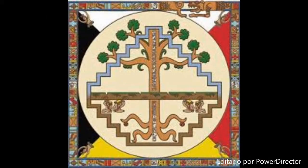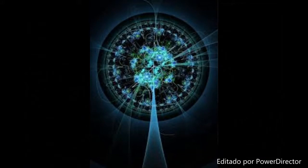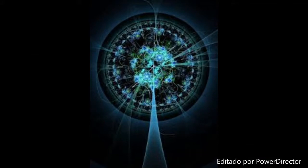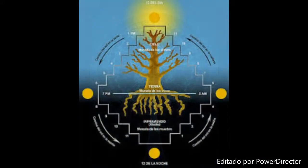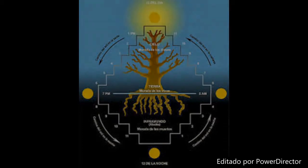El nivel inferior, situado bajo el agua, era ocupado por el inframundo, o Xibalba. En este tenebroso lugar se libraba una despiadada lucha del Sol después de su recorrido diurno por la bóveda celeste, con los seres y deidades infernales, a las que vencía reiniciando así su travesía por el nivel superior del universo.